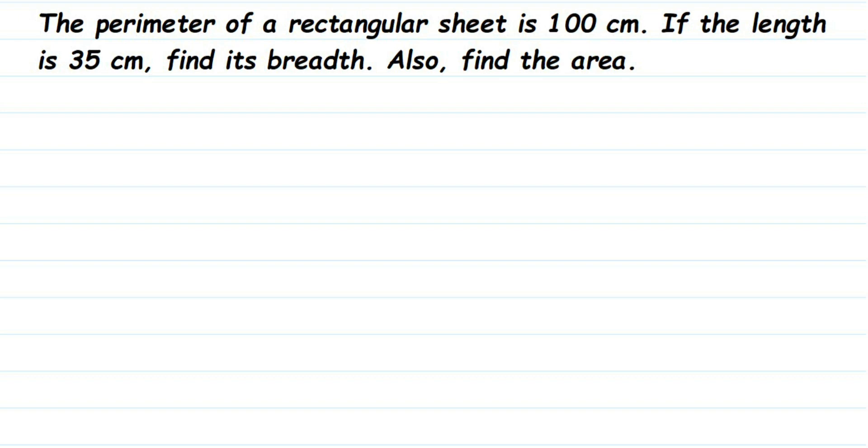Hello everyone, here's a question: The perimeter of a rectangular sheet is 100 centimeters. If its length is 35 centimeters, find its breadth. Also, find the area. So they are asking two things to find out - one is breadth and one is area.